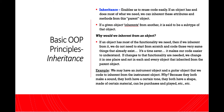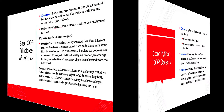Here's an example. We may have an instrument object and a guitar object that we code to inherit from the instrument object. Why? Because they both make a sound, they both have a certain tone, they both have a shape, they're made of certain material, can be purchased and played, etc.